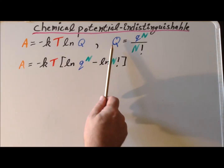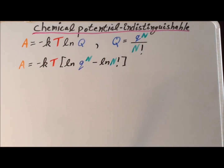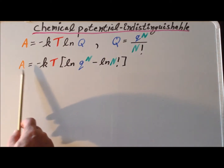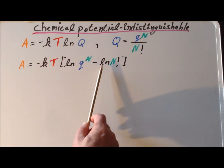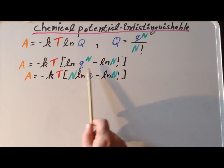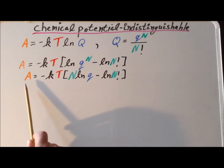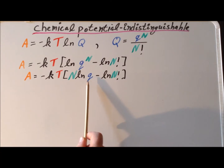Next we substitute our expression for capital Q into our expression for A and use the properties of the logarithm to write it as A equals minus KT times the quantity: the natural log of q to the N power minus the natural log of N factorial. We then apply another property of the logarithm to bring the exponent down as a coefficient, giving A equals minus KT times the quantity N times the natural log of q minus the natural log of N factorial.